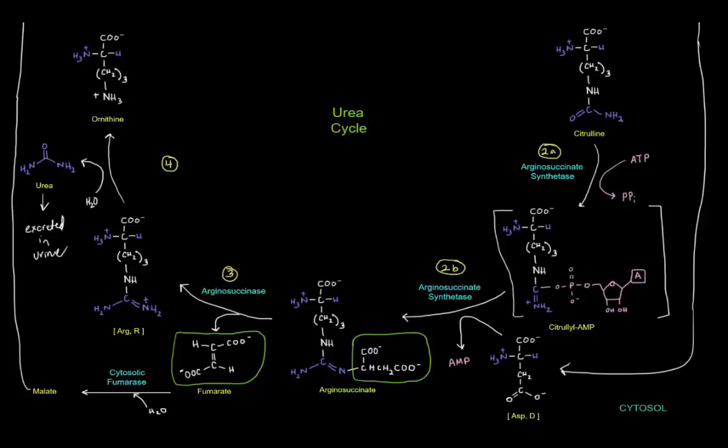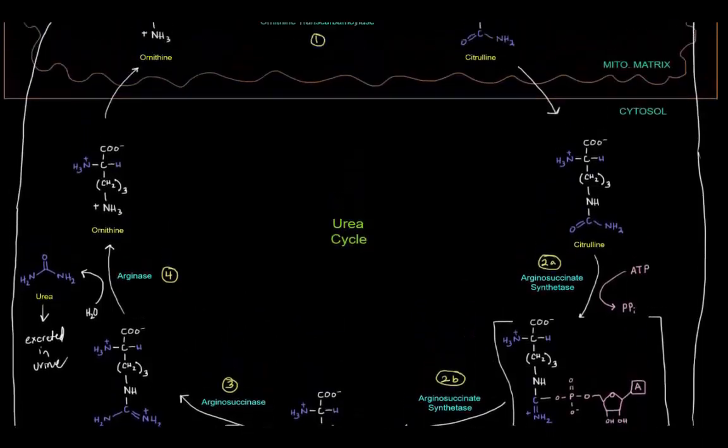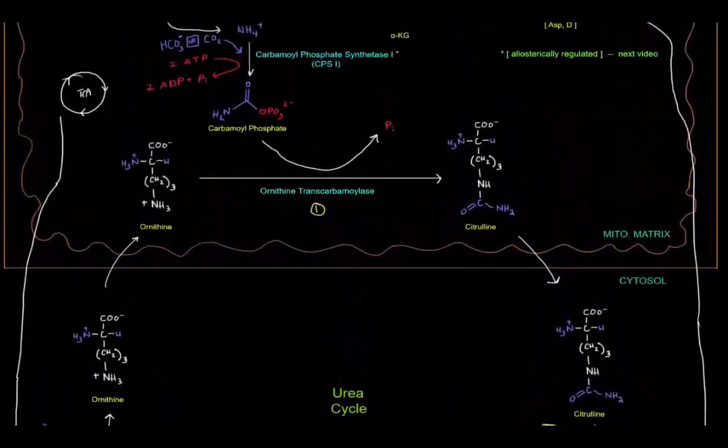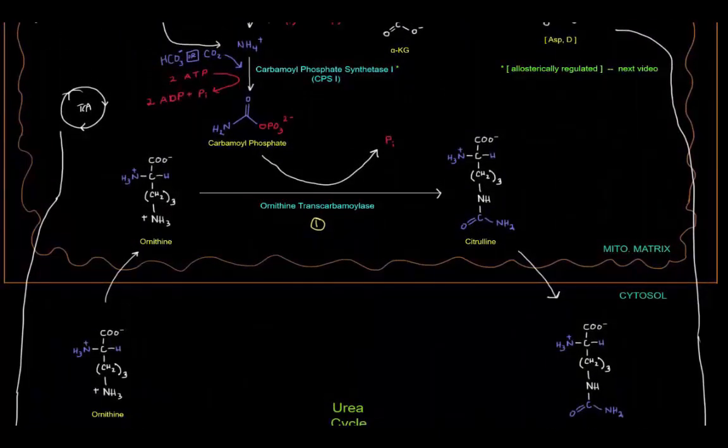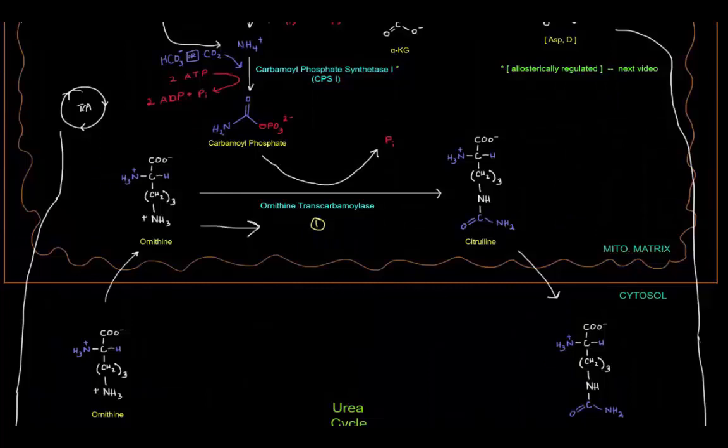And the rest of the molecule ends up regenerating ornithine. And that fourth step there of the urea cycle is catalyzed by arginase. Of course, once we make that urea and that ornithine, that ornithine can go back into the mitochondrial matrix for basically another round of the urea cycle with another carbamoyl phosphate.